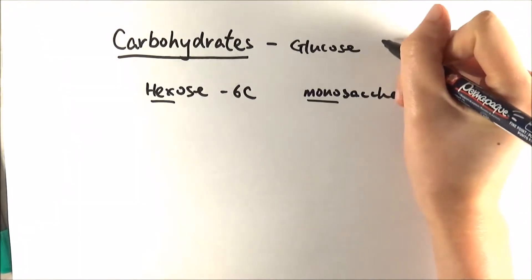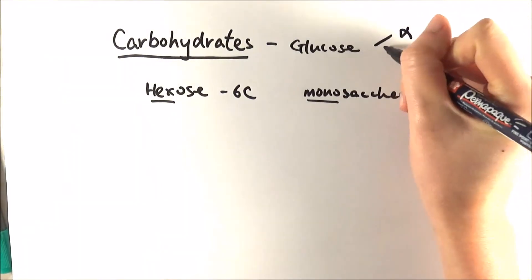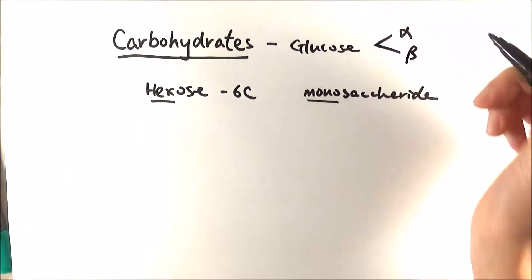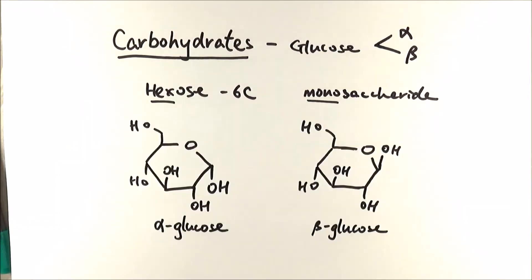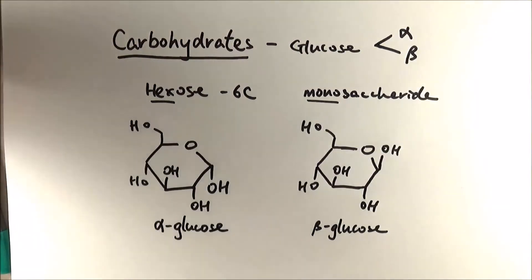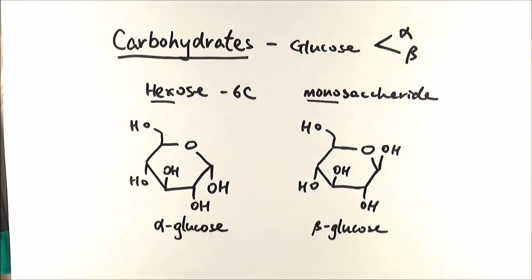Now there are two different types of glucose molecules, there is alpha and there is beta. The only difference is that the hydroxy group is the other way around and this is what they look like. Now as you can see the only difference between them is the fact that the hydroxyl groups are on different places.